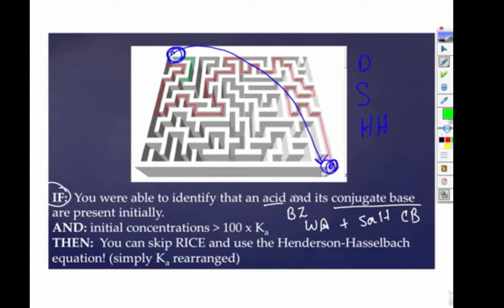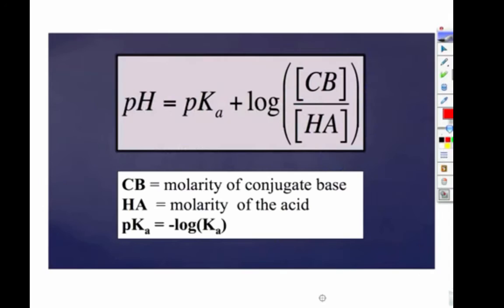Now, you also have to have a situation in which your initial concentrations are greater than 100 times Ka. In other words, ones in which we can neglect that plus and minus A or plus and minus B. So if those are both true, you can skip RICE and use this Henderson-Hasselbalch equation, which is really just your Ka rearranged. If you take minus the log of both sides and do a little rearrangement, you get this equation.